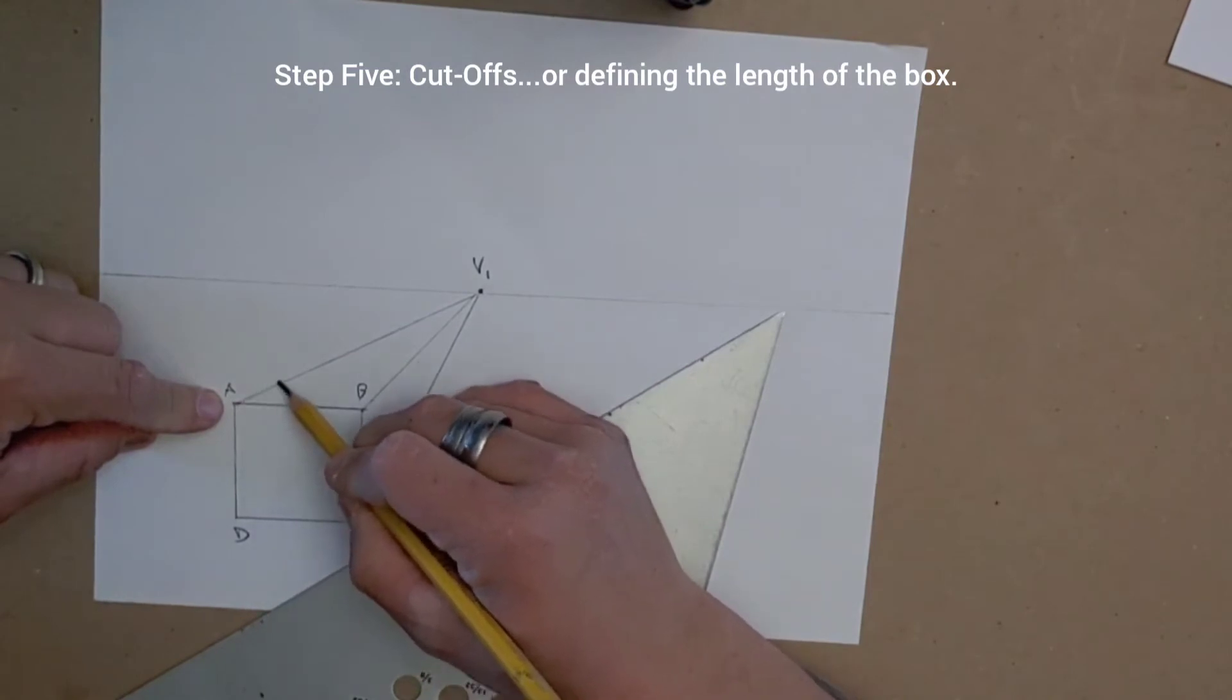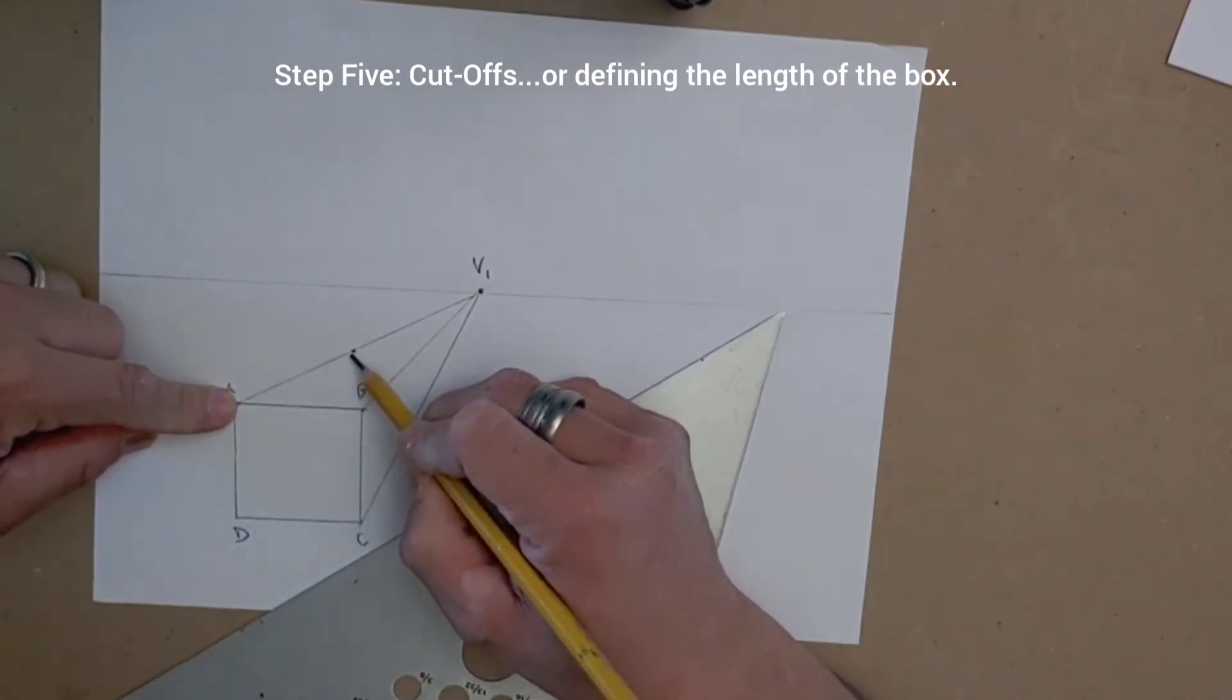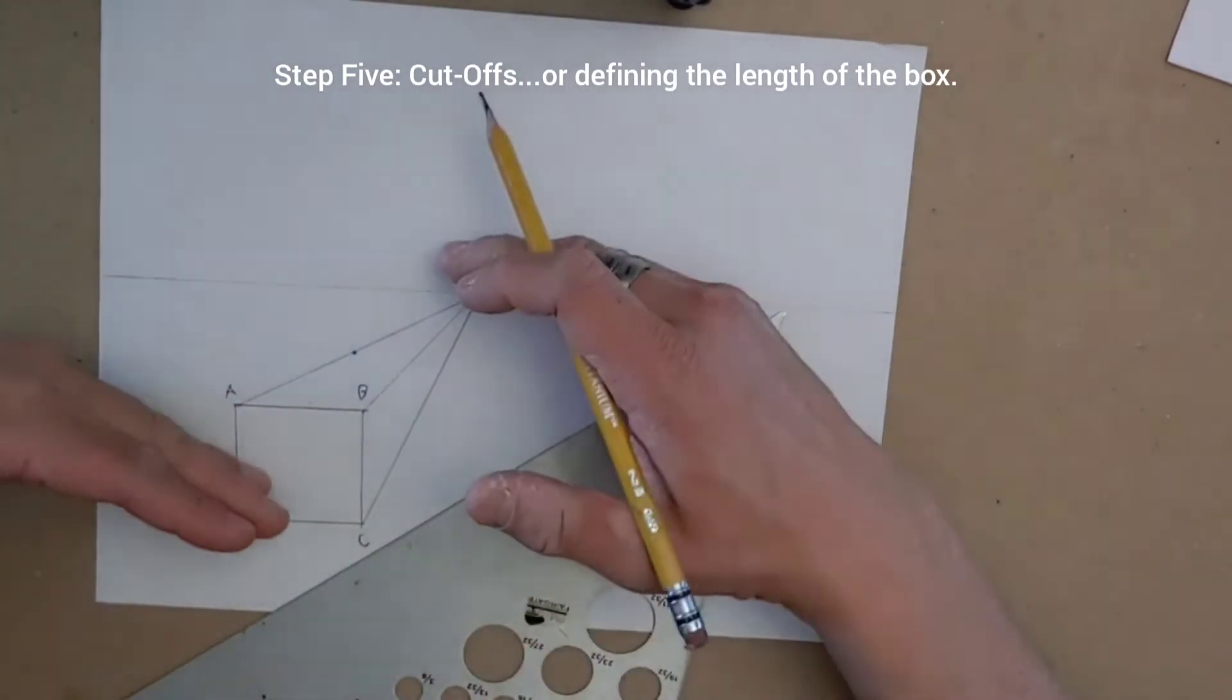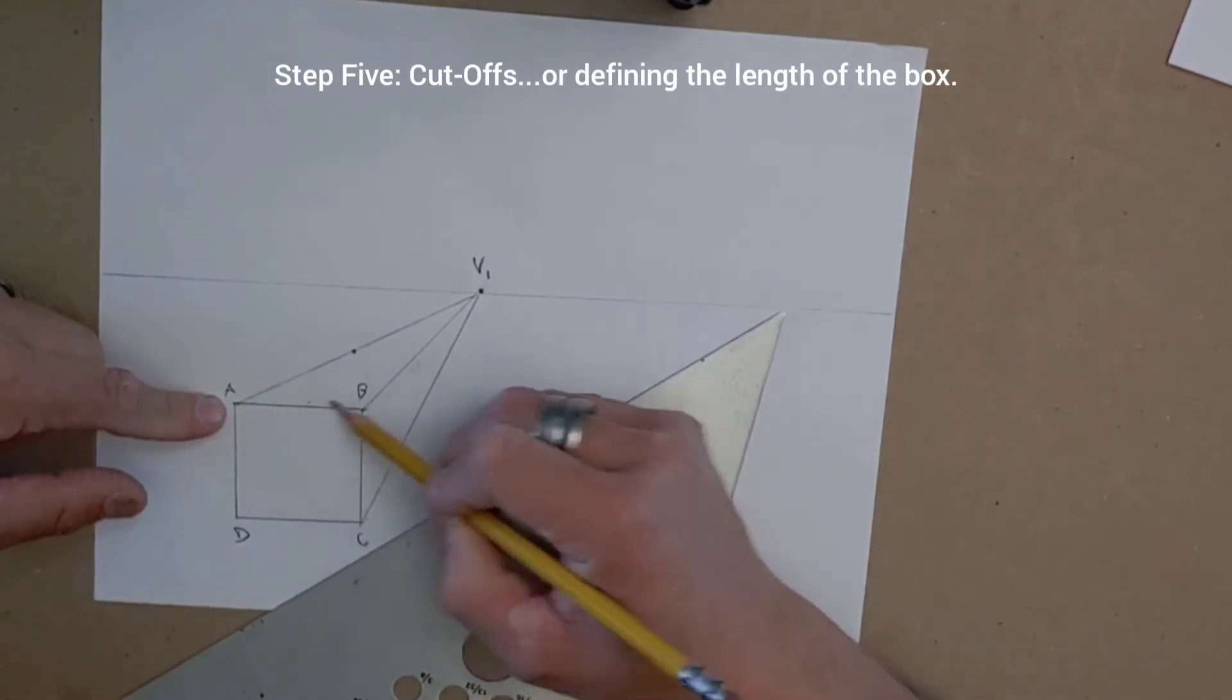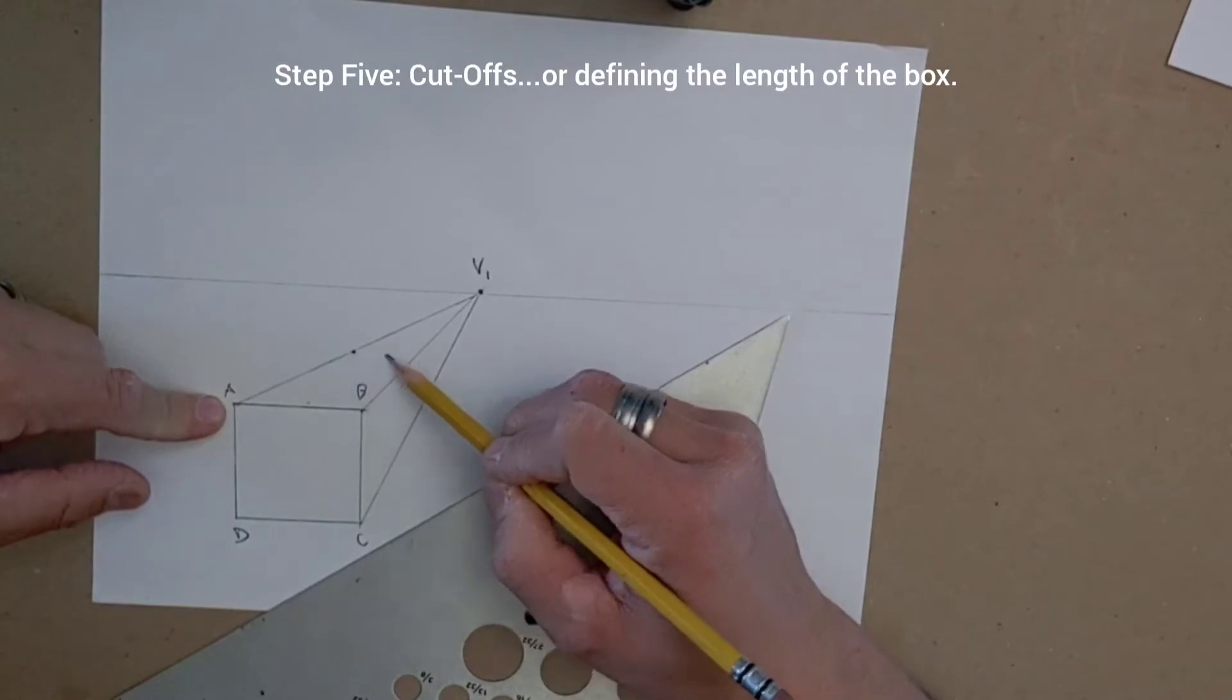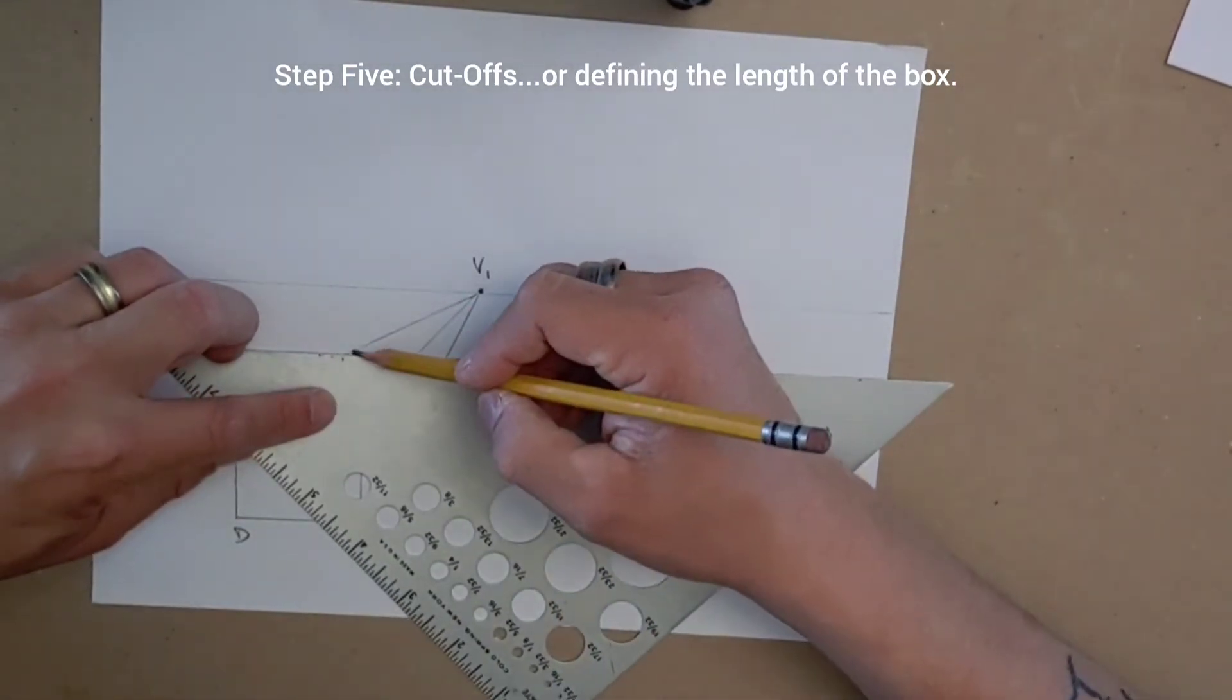I'm going to go from A to V1, and I'm going to stop somewhere arbitrarily. Maybe I'll stop there, because I want to cut my box off there. And now I have to do something called cut-offs. I have to cut the box off so it's not going on forever. If the front of my box goes side to side or horizontally, the back of my box will do the same. It's going to go horizontally side to side, and it'll do something like so.